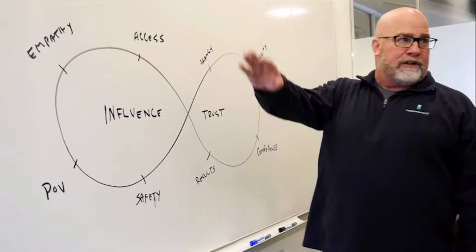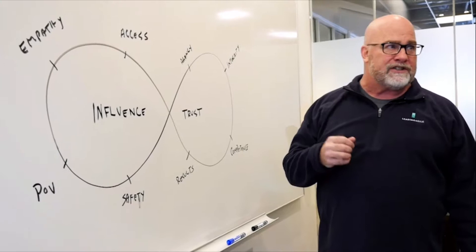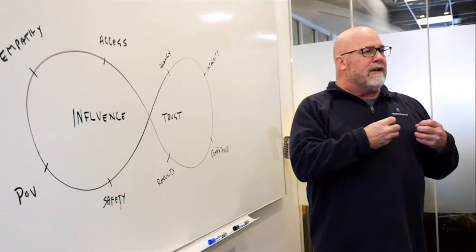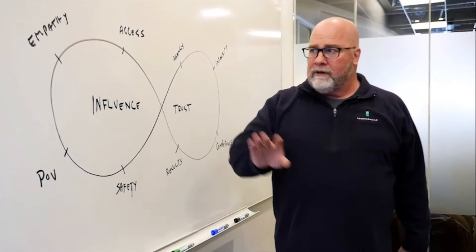Where I want to start with the influence-trust loop is on the influence side. Because it's a loop, you can start anywhere. It becomes a self-reinforcing loop, like a virtuous cycle, but it can also become a vicious cycle if you miss any of the steps. From the influence loop, the first step is getting access - actually getting in the room to talk to somebody about what their problem is and that they have a need they're willing to express. You've got to get in the room and have access with the right type of people.